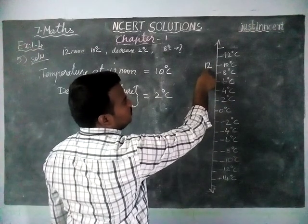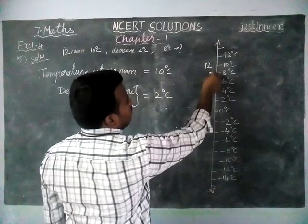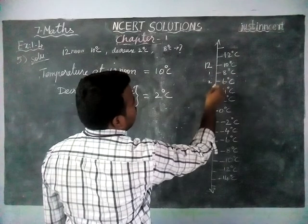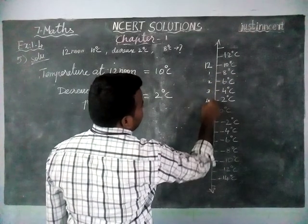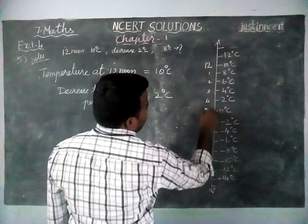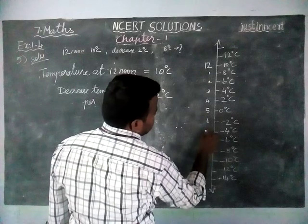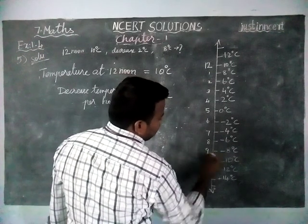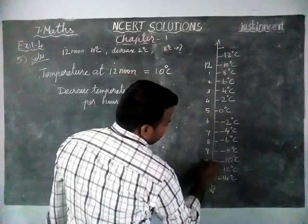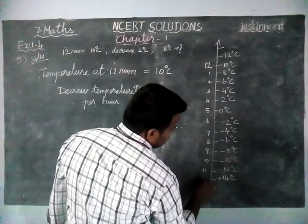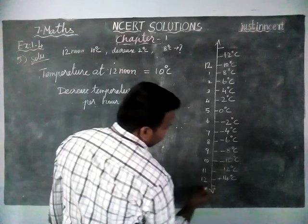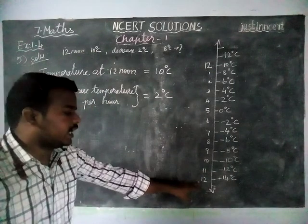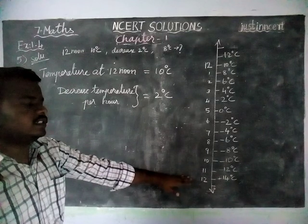This is 12 noon. So after that, this is 1 o'clock, 2 o'clock, 3 o'clock, 4 o'clock, 5 o'clock, 6 o'clock, 7 o'clock, 8 o'clock, 9 o'clock, 10 o'clock, 11 o'clock, 12 o'clock midnight. So by using the number line, we can find these answers.